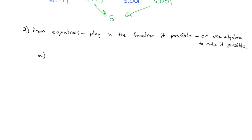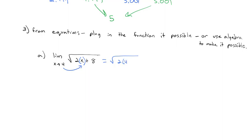If we want to find the limit as x goes to 4 of √(2x+8), x is getting close to 4, so let's just plug 4 in. We get √(2×4+8) = √(8+8) = √16 = 4. By just plugging the number into the function, we can figure out what the limit would be at that point.